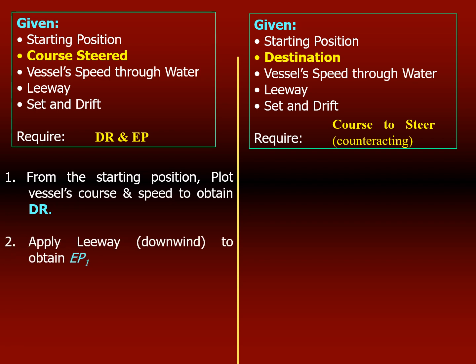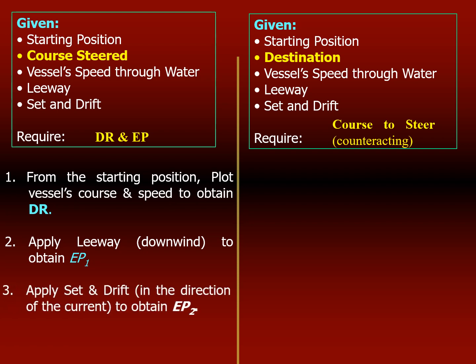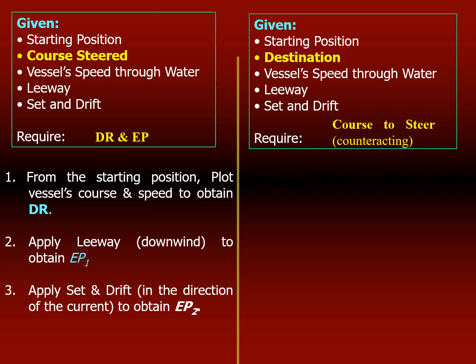When allowing, from the starting position you allow for the wind first to get EP1, then apply the current at the end of the steered position. So you allow for leeway at the very starting position to obtain EP1. I'll show you by drawing in the next slide if this isn't clear. Then from EP1, you apply the set and drift to get EP2.